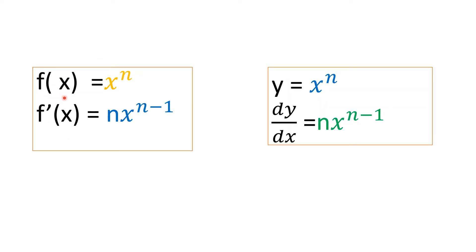Whenever you are given a function f of x equal to x power n, the derivative f'(x) will be equal to n multiplied by x power n minus 1. What you do is take this power, bring it to the beginning, write x as it is, and the power gets subtracted by 1, giving the new power as n minus 1.